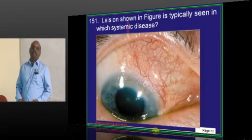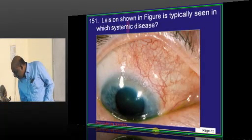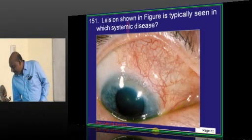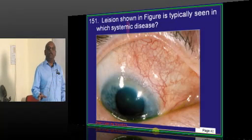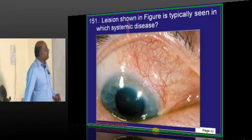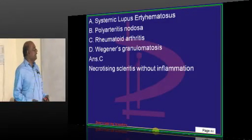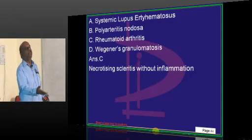So, what is this lesion which you are seeing? We are seeing scleritis. AD, AR, XLD also. Even autosomal dominant, autosomal recessive and X-linked. Other patterns of inheritance are also being found. The question is that of the most common pattern of inheritance. Then, what is this lesion? Scleritis. Scleritis is a part of rheumatoid arthritis. Necrotizing scleritis without inflammation is the feature of rheumatoid arthritis.